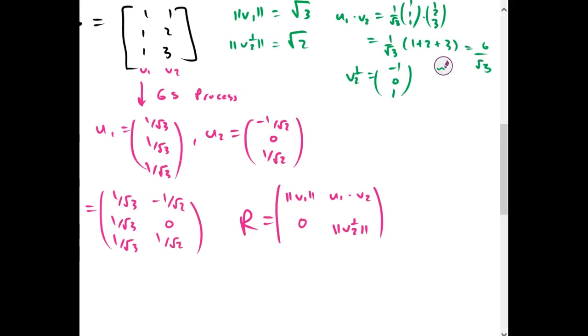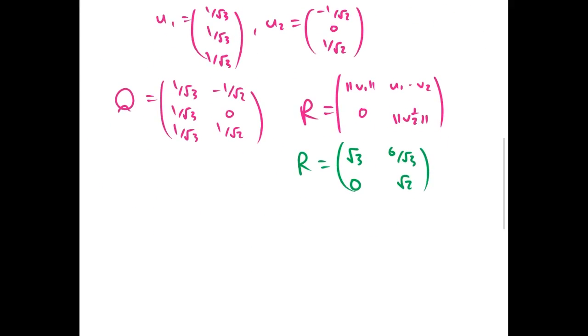So this gives us an R which is square root of 3, 0, 6 over root 3, and square root of 2. So we can write V as a product of Q and R, where Q is 1 over root 3, 1 over root 3, negative 1 over root 2, 0, and 1 over root 2. And R is square root of 3, 0, 6 over root 3, and square root of 2.